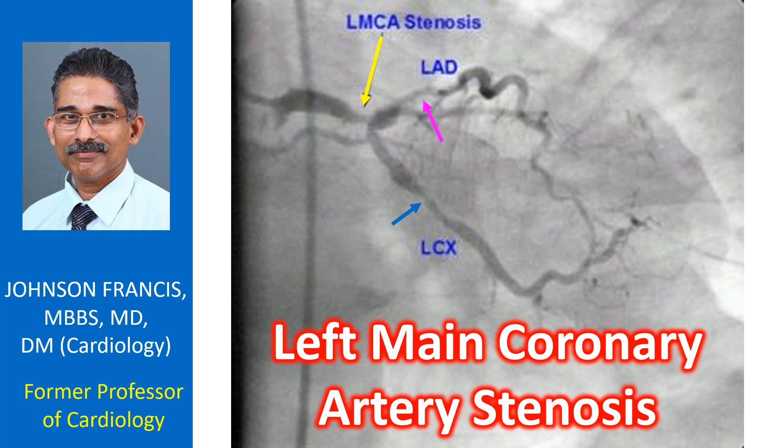Left main bifurcation angioplasty is also another option with the availability of better hardware, though chances of restenosis are higher. Distal lesions are usually associated with ostial lesions of the left anterior descending and left circumflex coronary arteries.